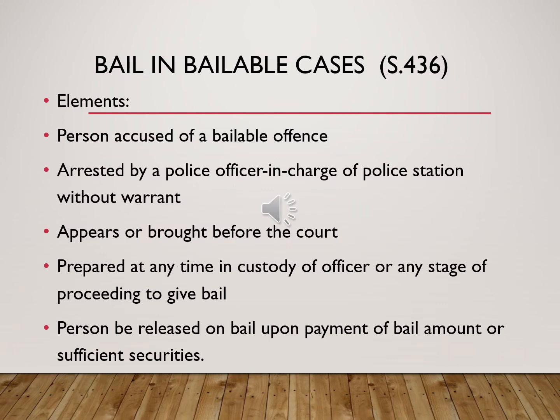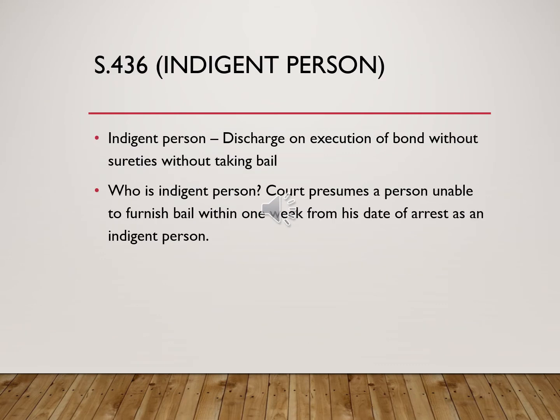Bail to be granted in bailable cases is covered under Section 436. The essential elements are that a person must be accused of a bailable offence and must be arrested by a police officer in charge of the police station without a warrant. He or she must be brought before the court and told about the right to furnish bail. The person will be released upon payment of bail amount or sufficient securities. The court discharges an indigent person on execution of bond without sureties. An indigent person is presumed to be indigent if he fails to furnish bail within one week from the date of arrest.